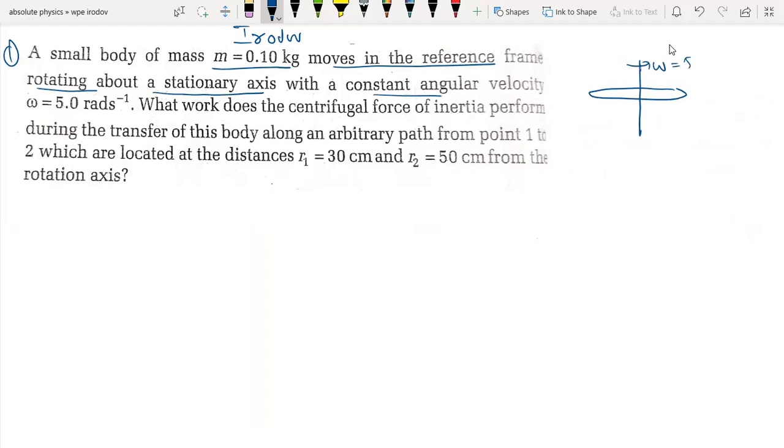What work does the centrifugal force of inertia perform during the transfer of this body along arbitrary paths from point 1 to point 2 which are located at 30 cm and 50 cm. So the path of the circle is changing.